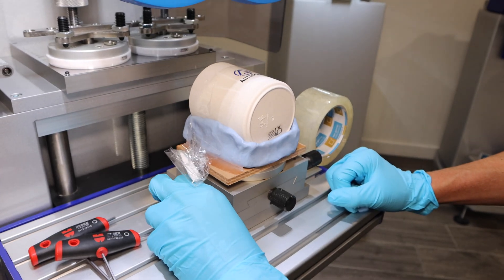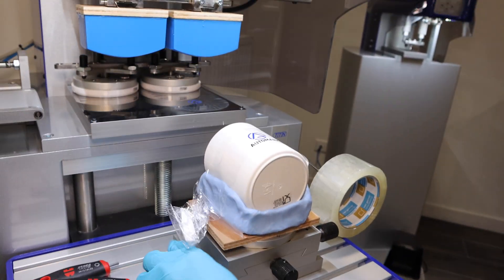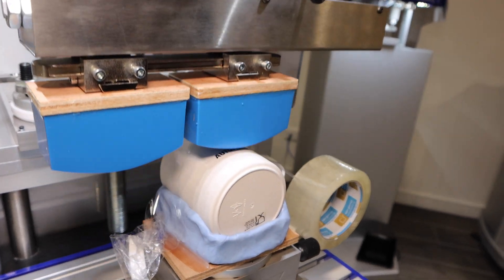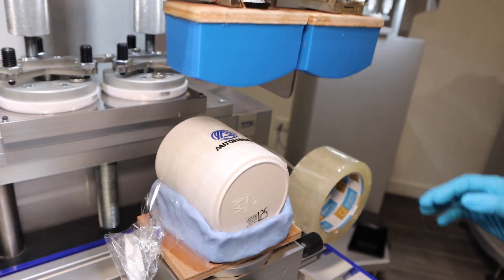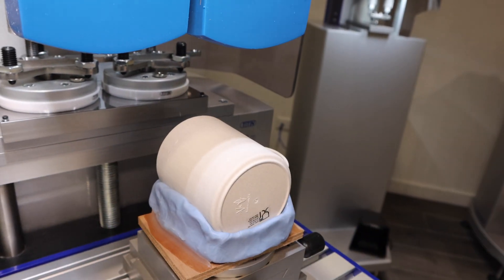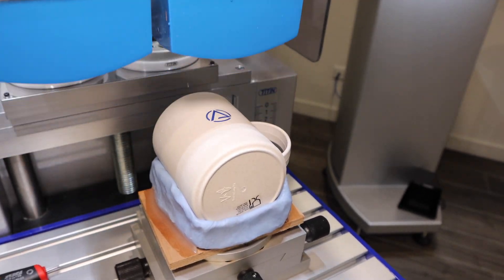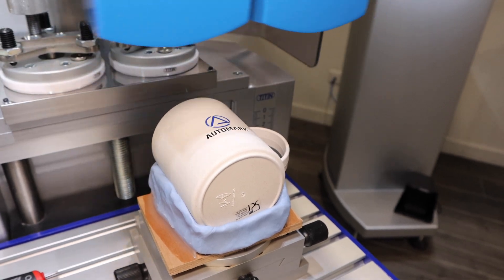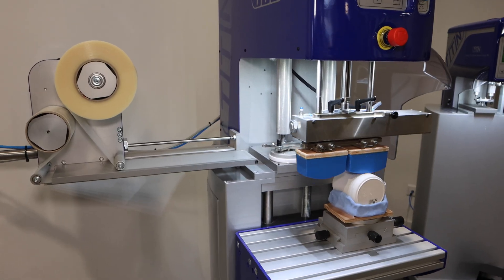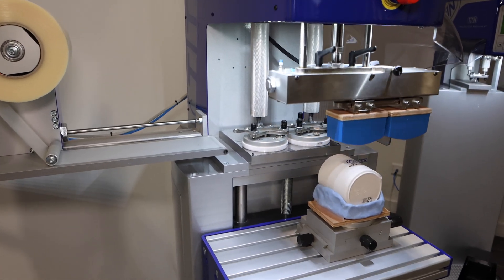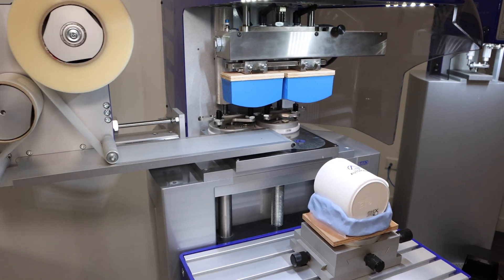Now let's center the image a bit more. We are using the optional XY table to quickly center the part. This table also allows for rotational adjustments to be made. Once we are happy, we remove the packing tape and print directly on the part. The optional tape cleaner cleans the pad, allowing for continuous printing.